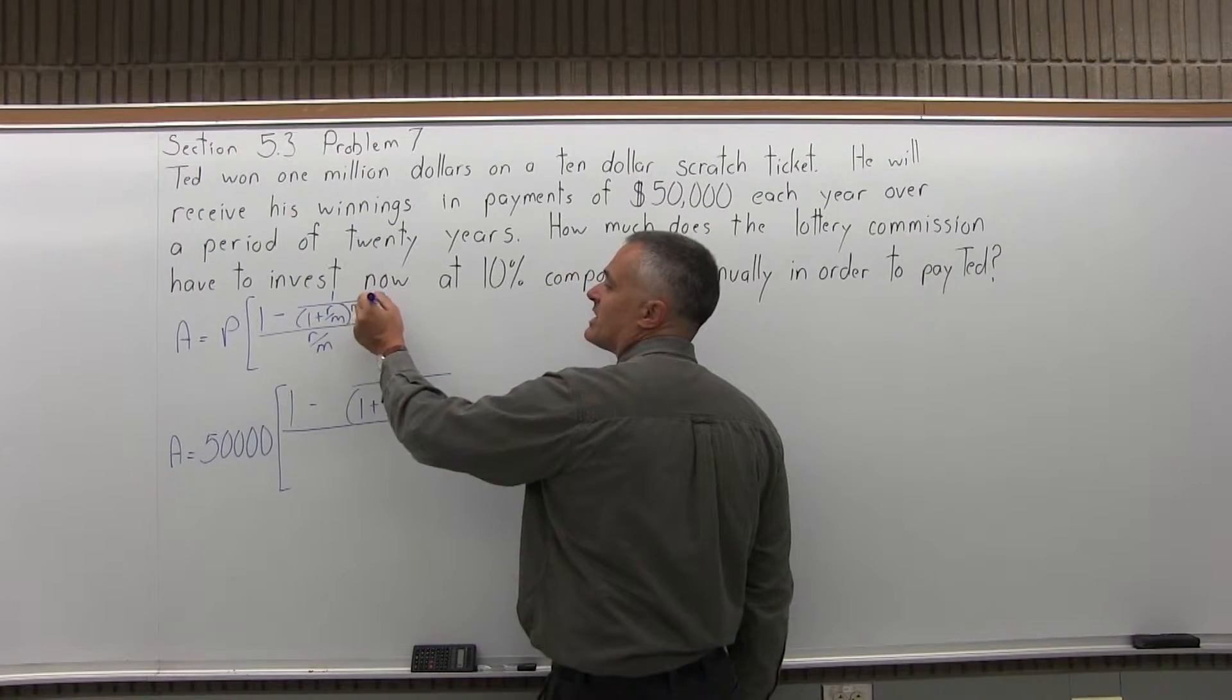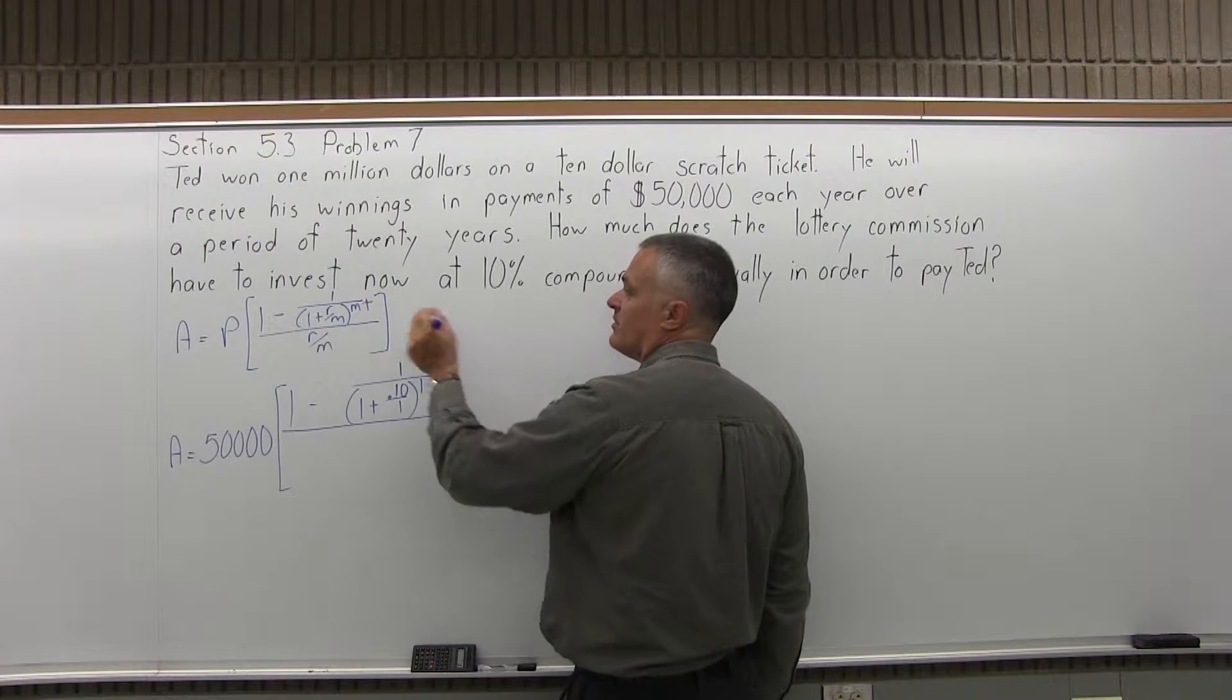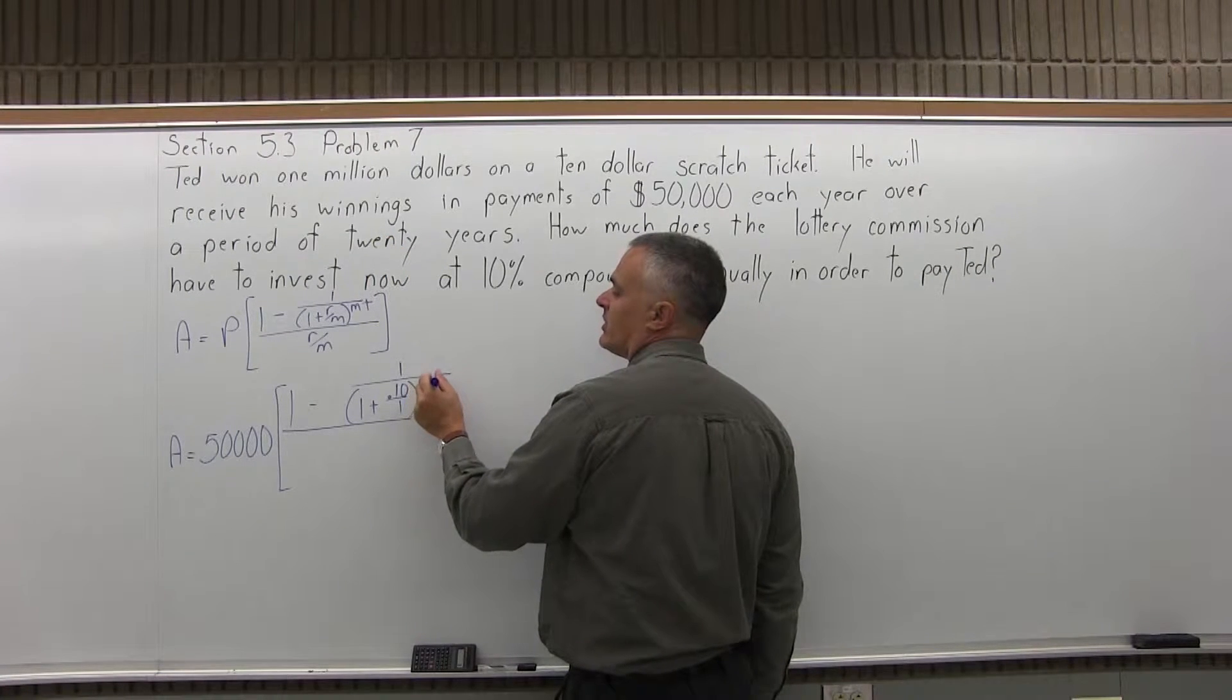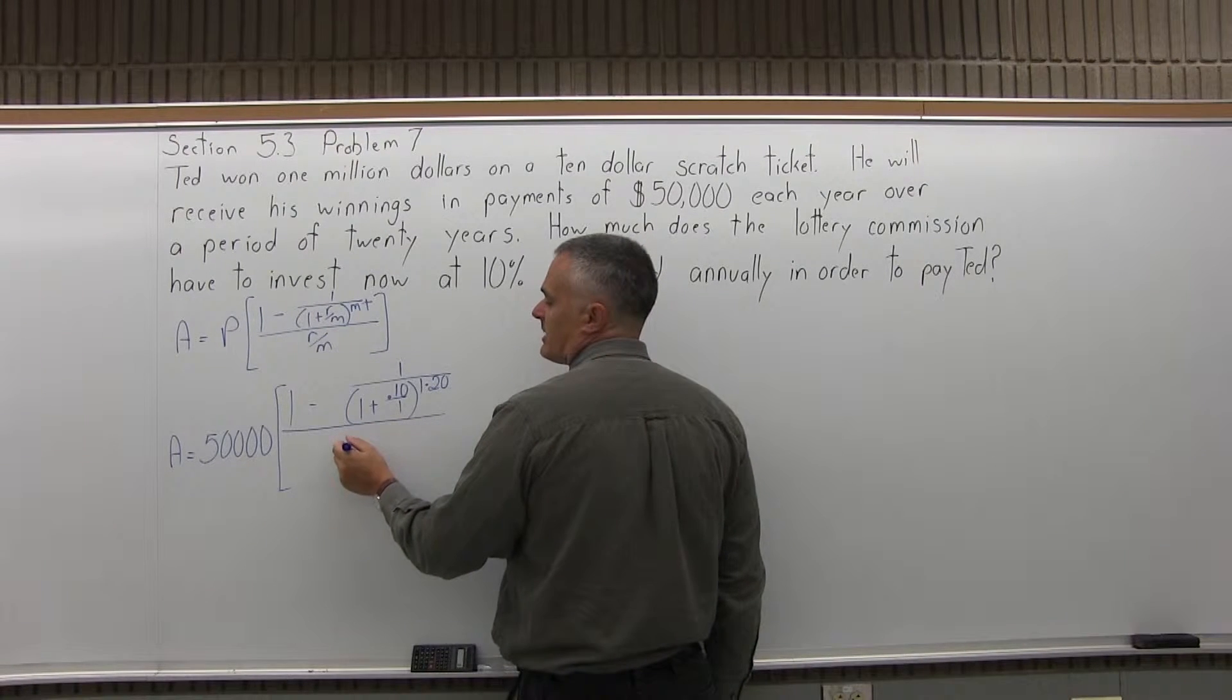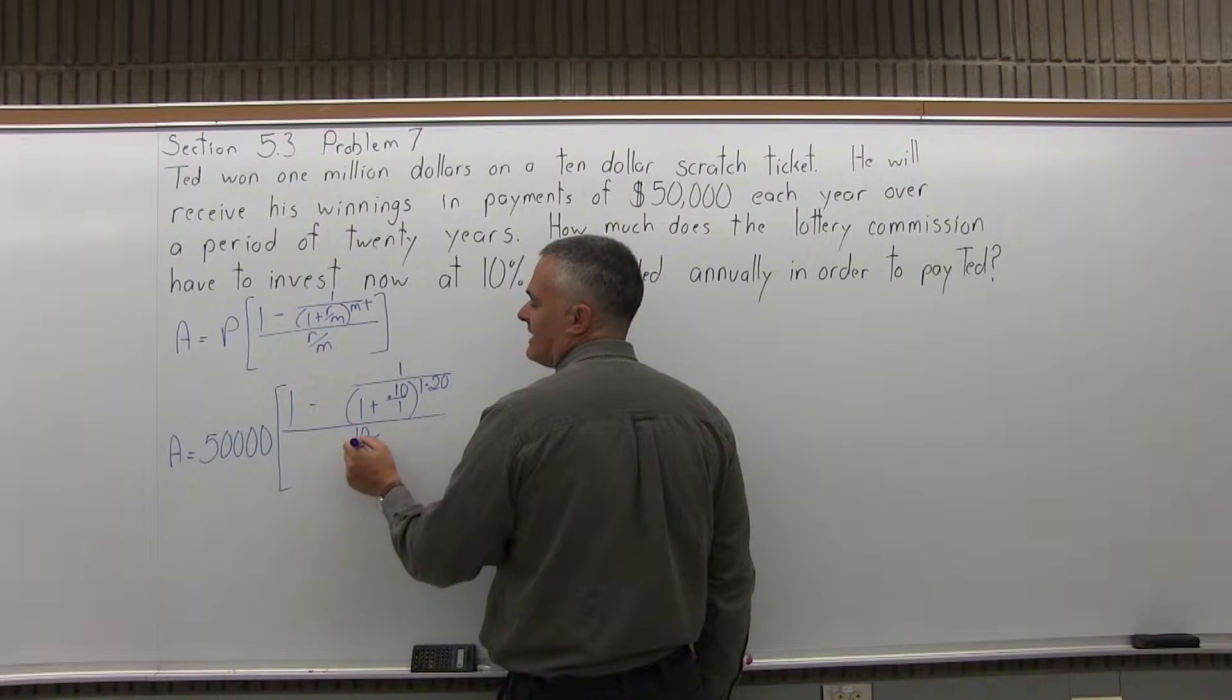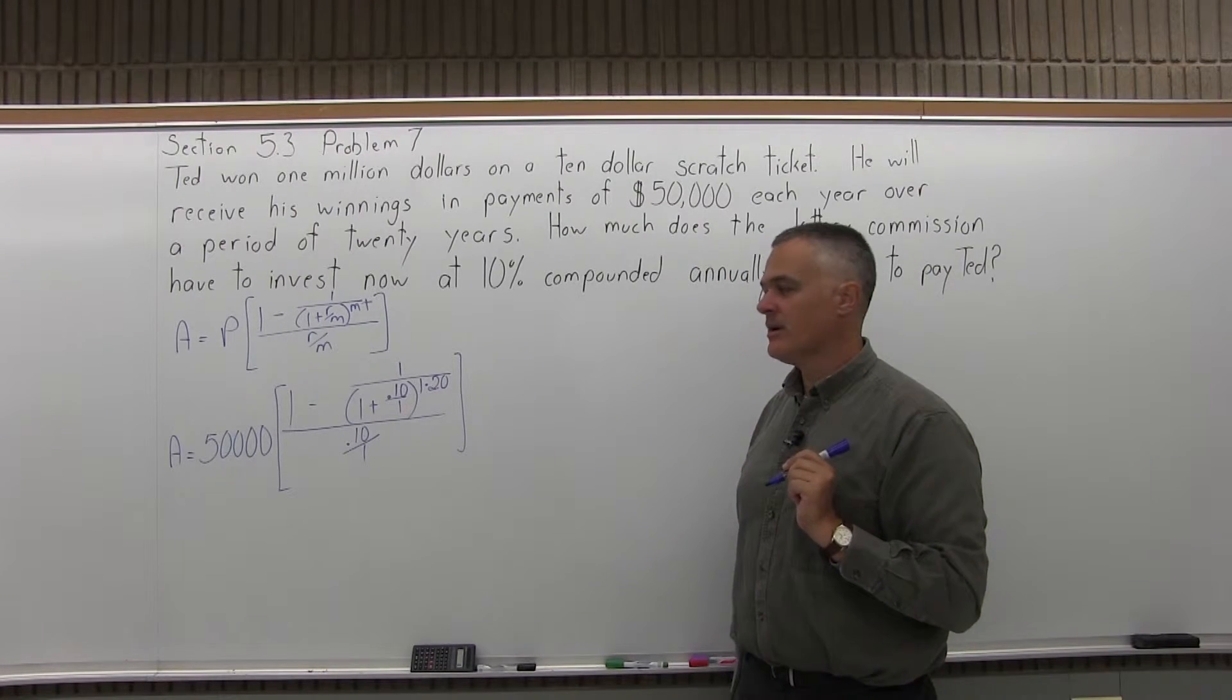And then raised to an exponent of M times T. Again, M is 1 for the annual compounding and annual payment. T is 20 because the payments are going to be made over 20 years. So, the exponent is 1 times 20. And then in the denominator of the brackets, R over M again, so the value of R is .10, the rate as a decimal. And the M is 1 because it's annual compounding and we're making one payment per year.